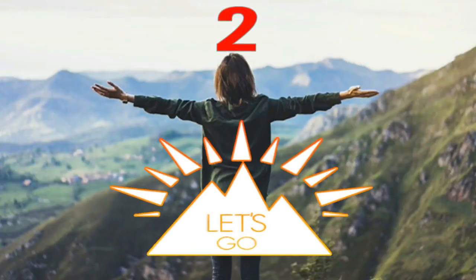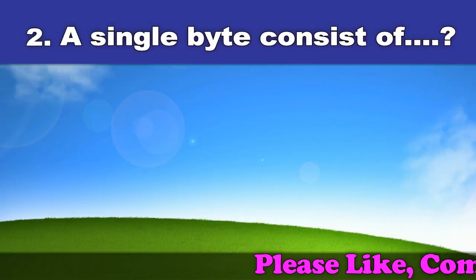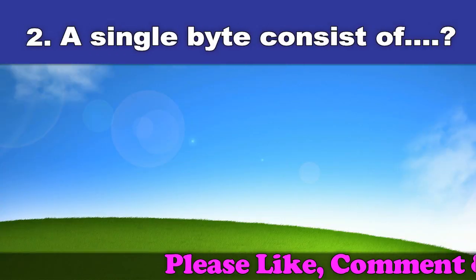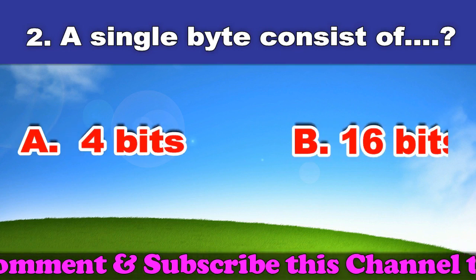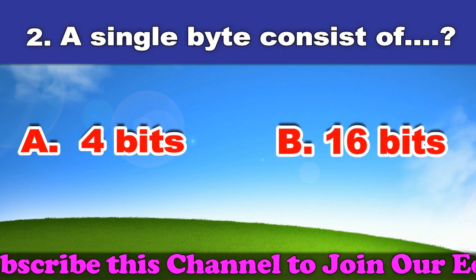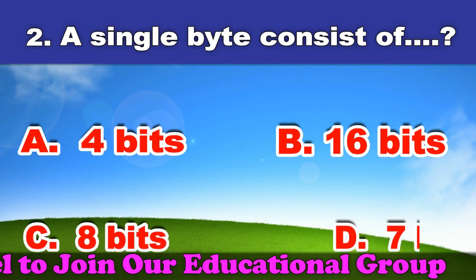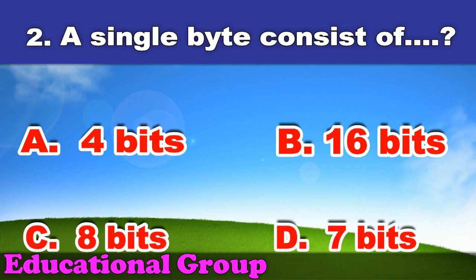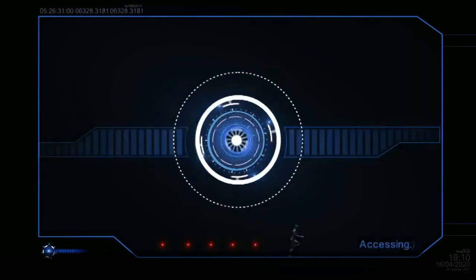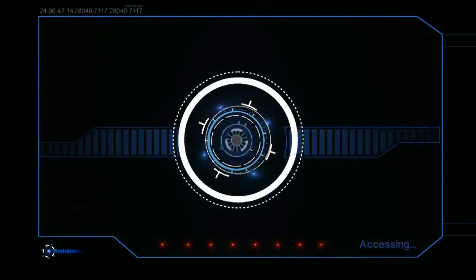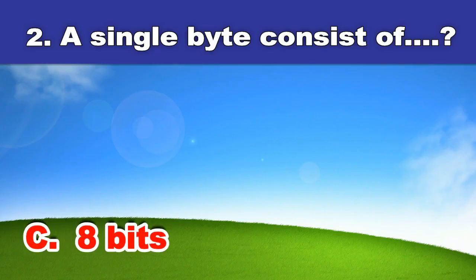Second question: A single byte consists of. A. 4 bits. B. 16 bits. C. 8 bits. D. 7 bits. And the answer is 8 bits.